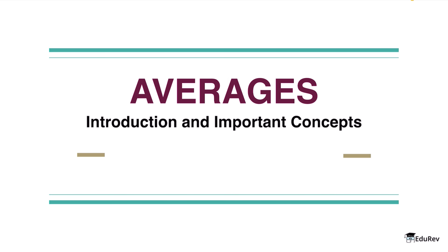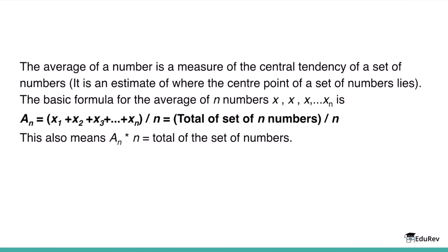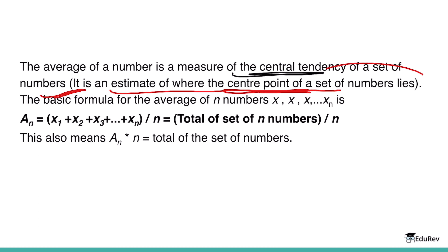Hello everyone, let's begin with today's topic: averages. The average of a number is a measure of central tendency of a set of numbers — in other words, it's an estimate of where the center point of a set of numbers lies.